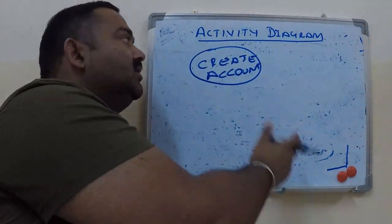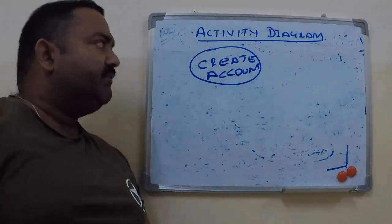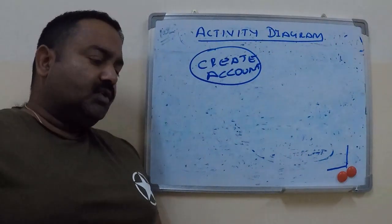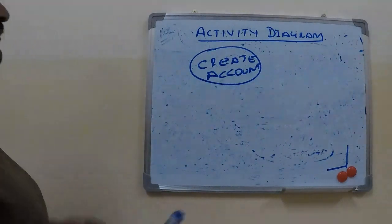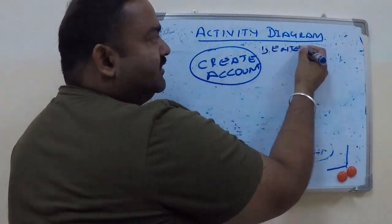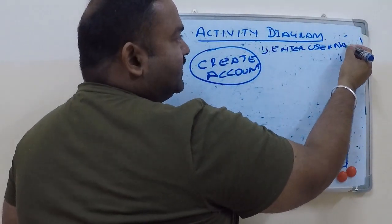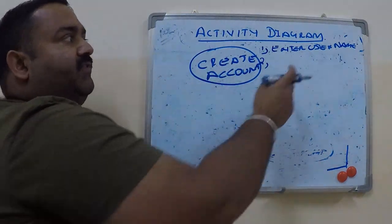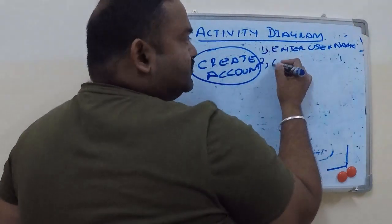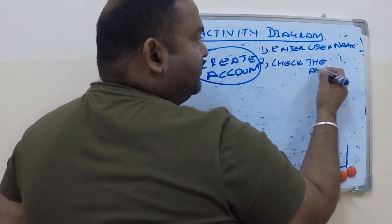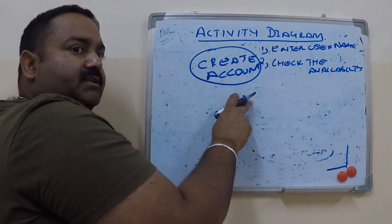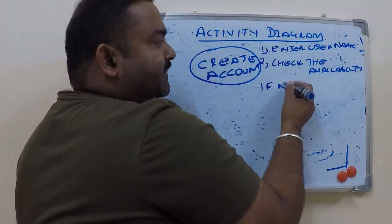An activity diagram is a diagram which shows all the workflow to complete a use case. For example, creating an account on an email server is our use case. The first thing you do is enter a username, then the mail server checks whether this username is available or not — it checks the availability.